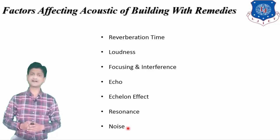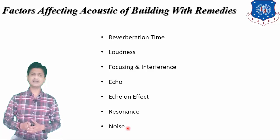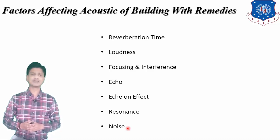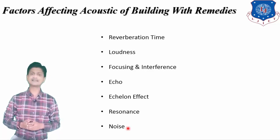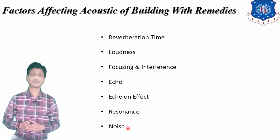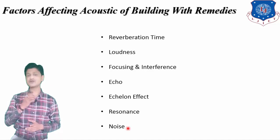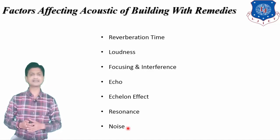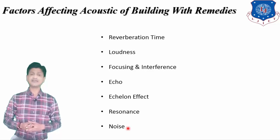The next type is structure-borne noise. The noise which is conveyed through the structure is called structure-borne noise. By using walls with air space we can reduce that structure-borne noise. The next is inside noise — the noise which is produced inside the hall, for example AC fans, typewriters, etc. Such machinery should be placed with sound absorbing materials to reduce that inside noise.